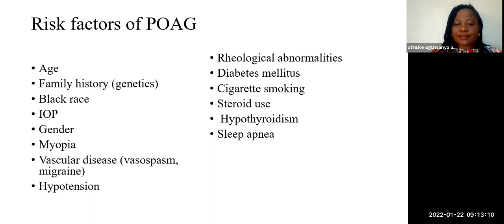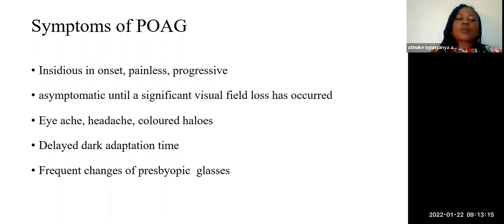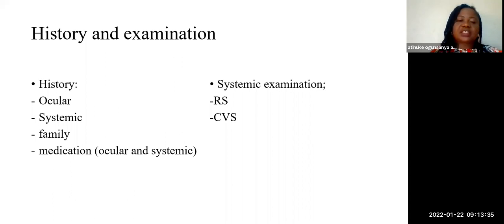Primary open-angle glaucoma is of insidious onset, painless and progressive. It is asymptomatic until significant visual field loss has occurred. The patient may have a headache as a non-specific complaint, delayed dark adaptation time, and frequent changes of reading glasses. On examination, history taking is very essential: the ocular history, age of onset, duration, characteristics of the visual field loss, and any family history, which is very important.